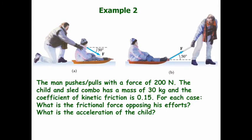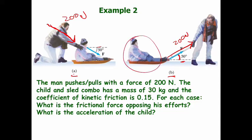Example two. We have situation A and situation B and we need to work these two parts separately. In both cases the man is pushing or pulling with 200 newtons, the angle with the ground is the same — 30 degrees — and in both cases the sled with the kid on it has a mass of 30 kilograms.